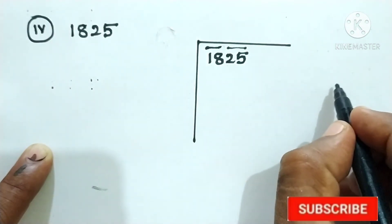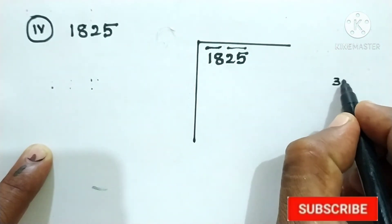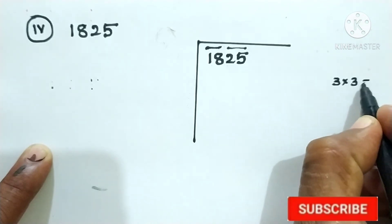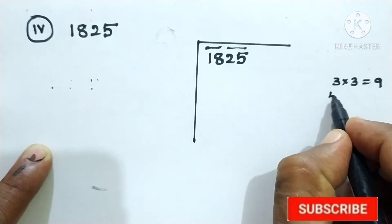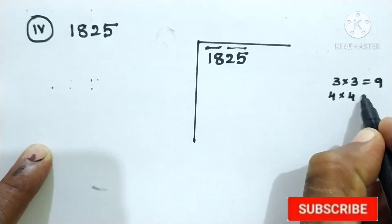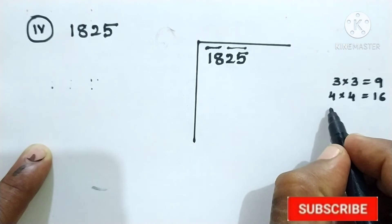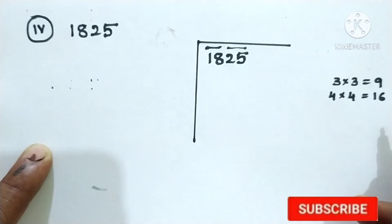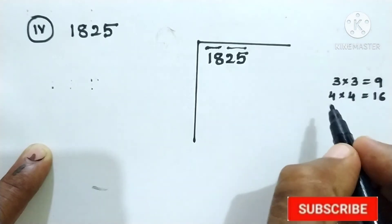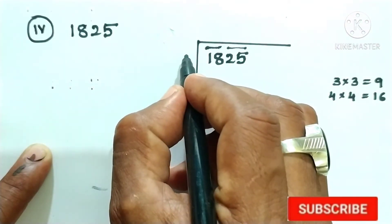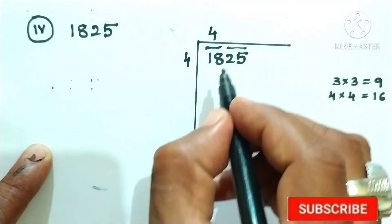Now, 18 is in the first group. If you take 3 threes, that is 9. Four fours is 16. Five fives is 25, which is greater than 18. So we should take 4 fours, which is 16.